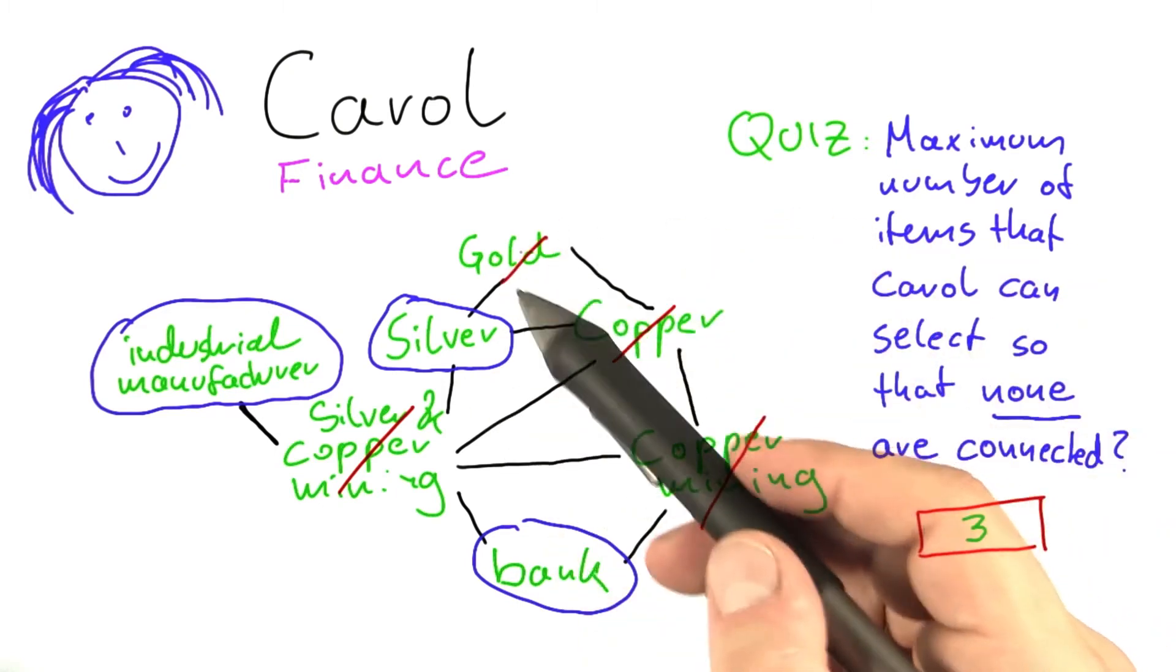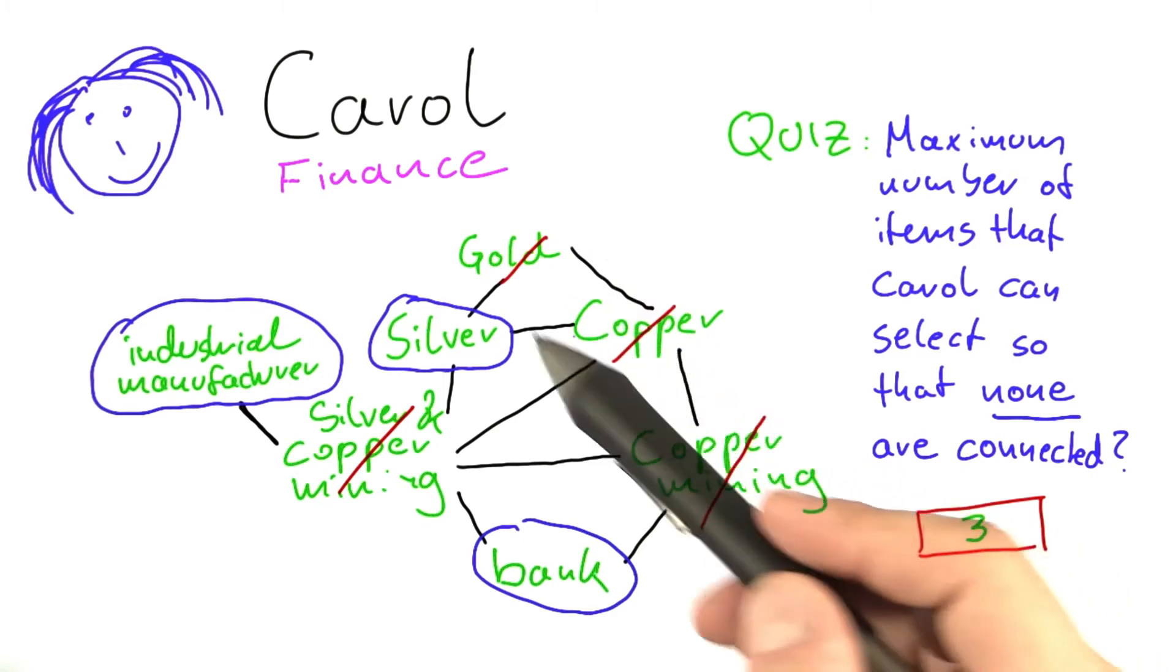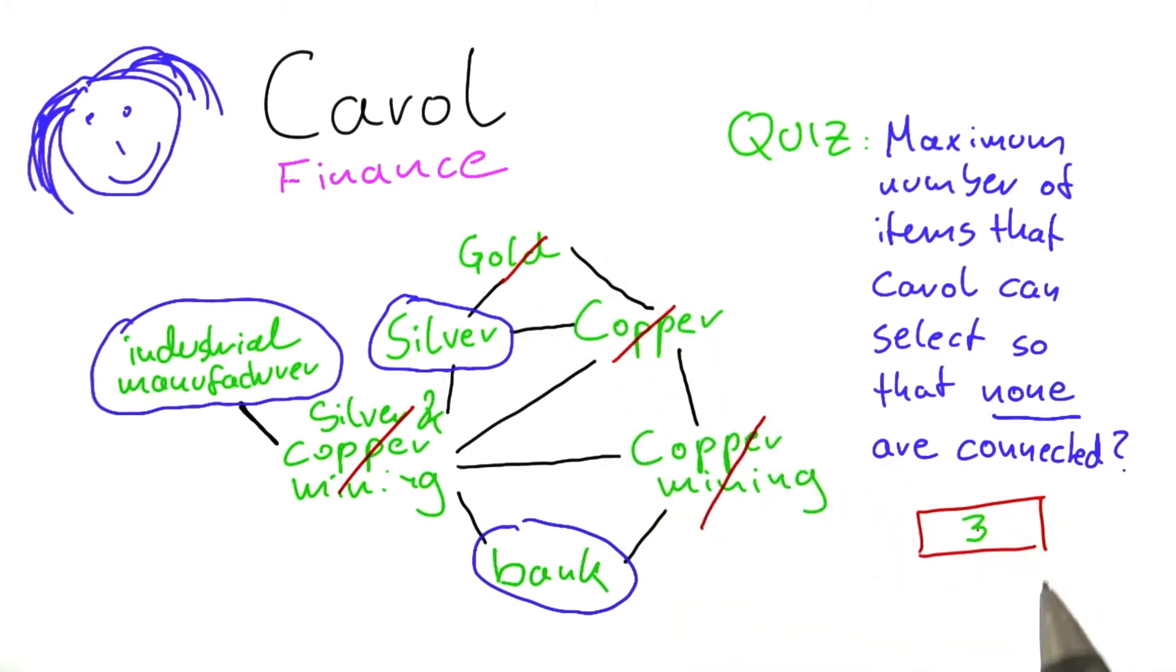And again, she could have also chosen one of the other possibilities here, but 3 is really the maximum number of items that she can select.